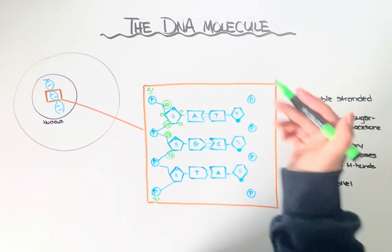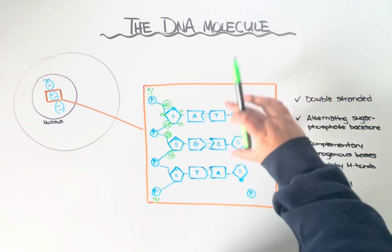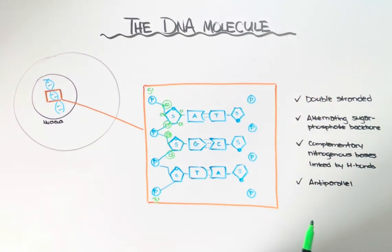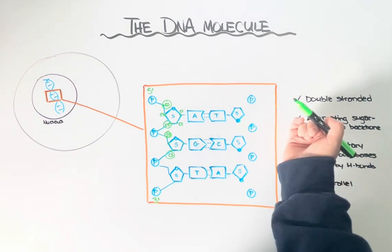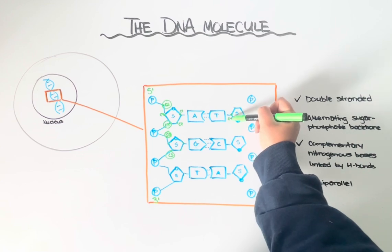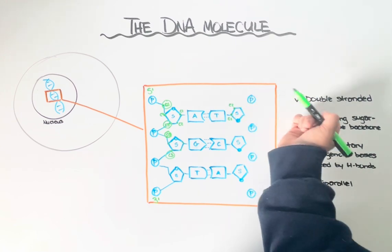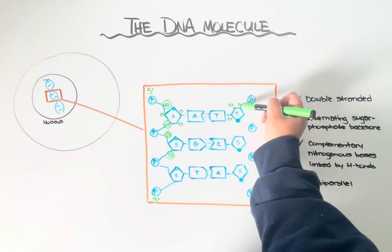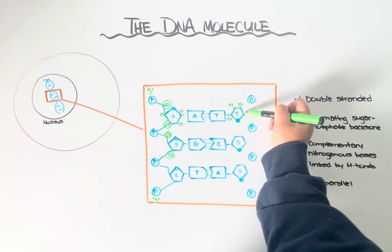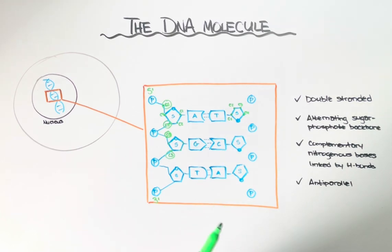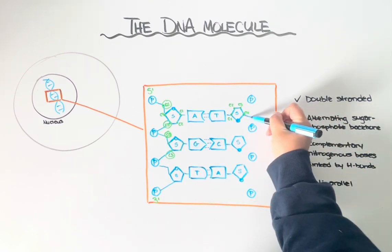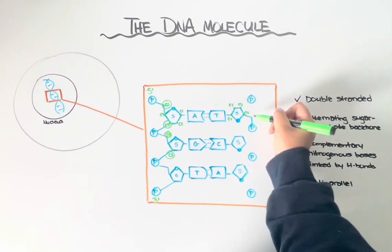Because this pentose sugar is upside down on the other strand, then we see actually the opposite directionality. Again, starting from the oxygen, here is going to be carbon one. Here is going to be carbon two. Here's carbon three. Here's carbon four. And then our branch is where we're going to find carbon five.